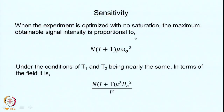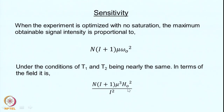The maximum obtainable signal intensity under no-saturation conditions is proportional to N·I(I+1)·μ·ω₀², i.e., proportional to the square of the magnetic field. Including noise, which goes as the square root of the field, the practical dependence on magnetic field is the 3/2 power. The signal is also proportional to μ³ (the cube of the nuclear magnetic moment) and to H₀².